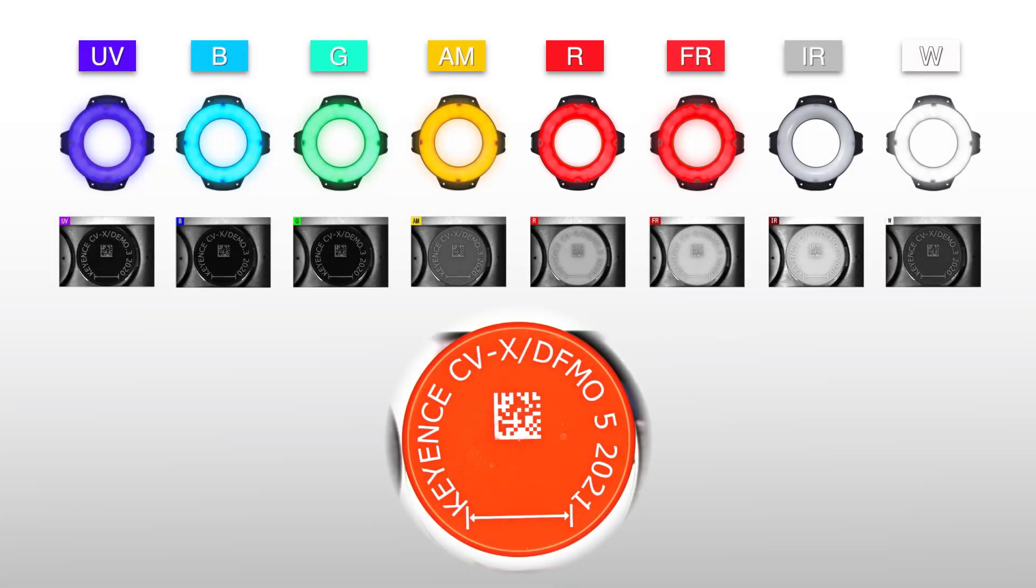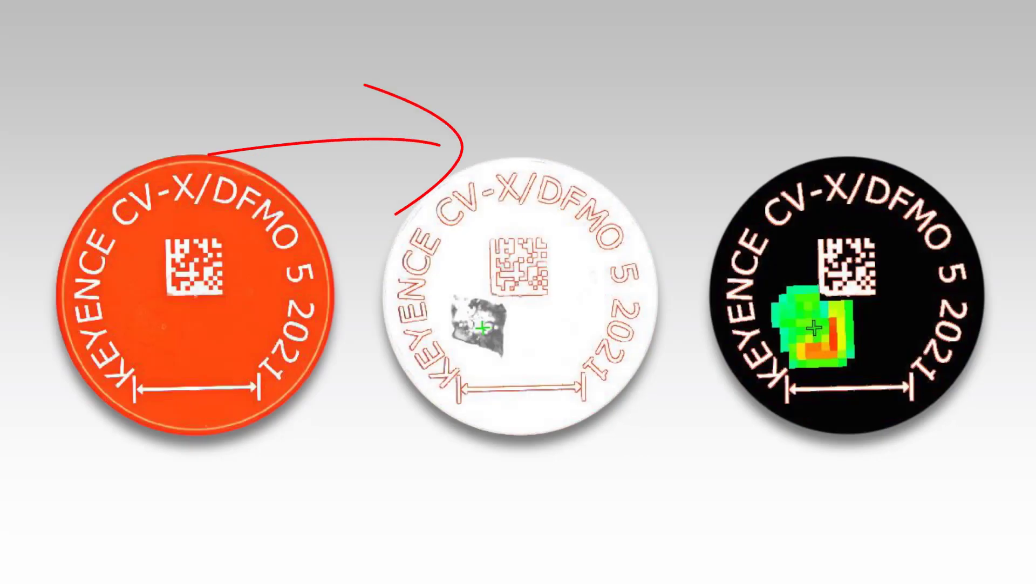With how these wavelengths of light interact with the target, we're able to generate an in-depth color image of the part using a monochrome camera. And because the hardware and the powerful algorithms are integrated within the vision system, setup and programming for the user is quite simple and defect detection is much more stable.